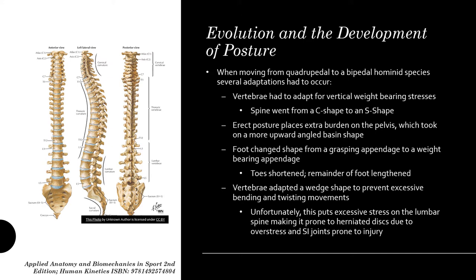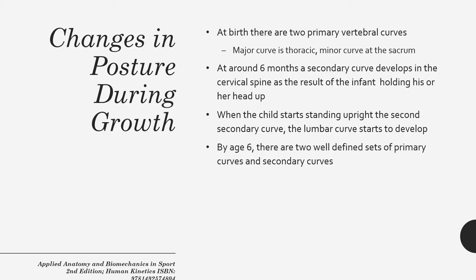Unfortunately, that wedge shape puts excessive stress on the lumbar spine, making it prone to herniated discs and other overstresses. It also places our sacroiliac joints — or SI joints — in a position more prone to injuries.